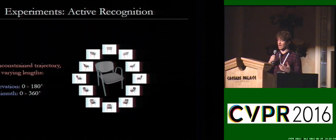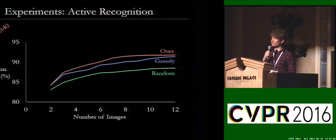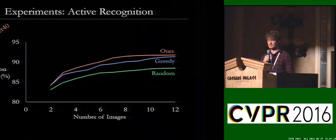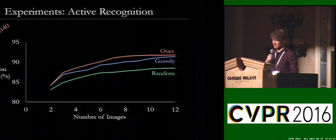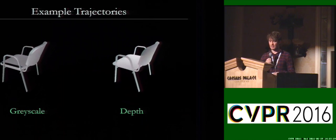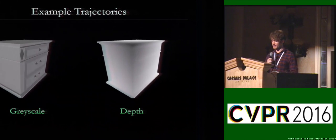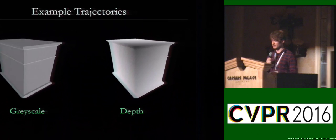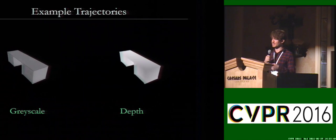We ran experiments to evaluate the impact of our trajectory optimization on recognition results, allowing for unconstrained trajectories. We compared against two baselines: a method that randomly chooses the next viewpoint, and a greedy method that chooses based on instantaneous local pairwise costs without considering the overall trajectory. Both active methods outperform the random baseline, but optimizing over the entire trajectory gives the best performance. Example trajectories show our method working for both grayscale and depth image modalities, with arbitrary unconstrained paths rather than predefined ones.